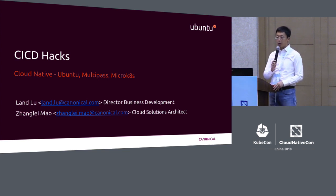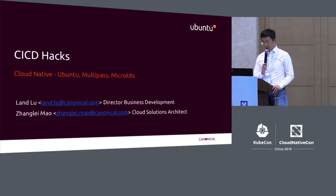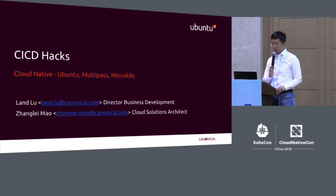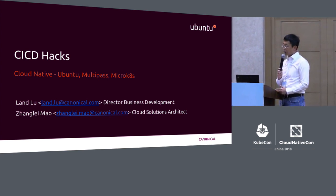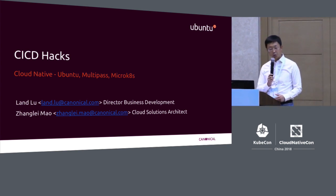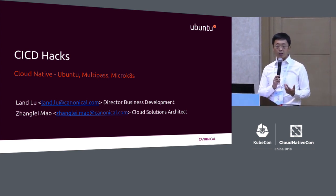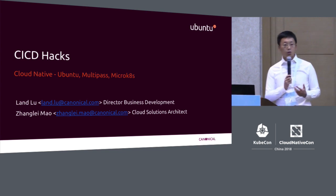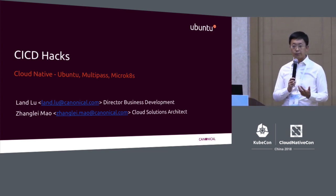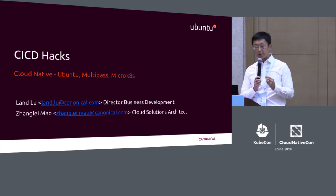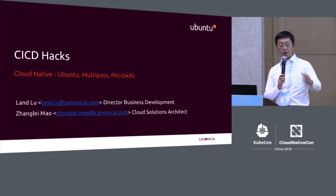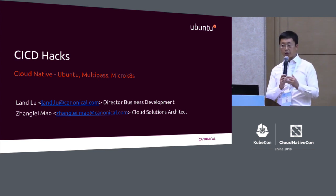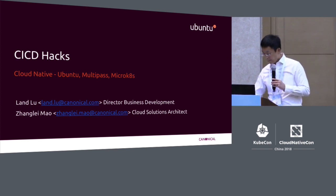To introduce our company, Canonical will firstly use Multipass on Ubuntu or Mac OS to construct a virtual machine. Then we use MicroK8s in the virtual machine to create a single-node CDK. CDK is the Canonical Distribution Kubernetes. We then use several tools to very quickly construct the CICD environment. Today's discussion will follow the agenda I just mentioned.